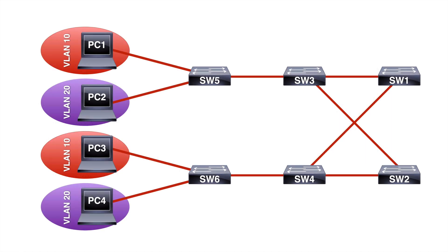Let's look at the topology I'm working with here. You can see I have six switches, all interconnected with trunk links, so we have some redundancy built in. Within this network we have two VLANs: VLAN 10 and VLAN 20. We have two host PCs connected to each of our access layer switches — a total of four end devices, two in each VLAN. PC1 and PC3 are in VLAN 10, and PC2 and PC4 are in VLAN 20.